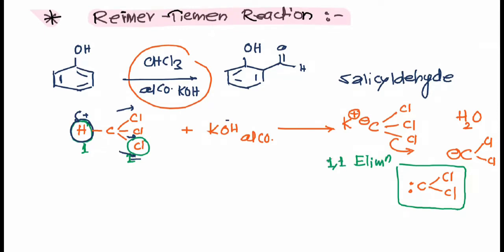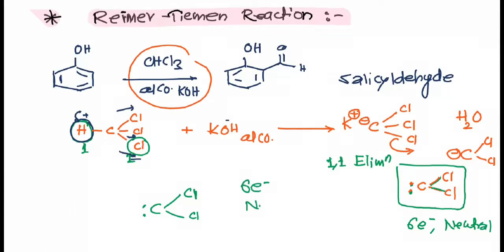Carbene is a six-electron species. Dichlorocarbene has six electrons, no charge — it is neutral but has an incomplete octet. It is electrophilic in nature because it is electron-deficient.